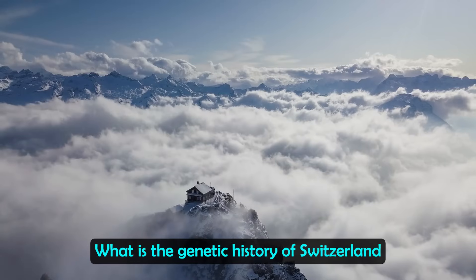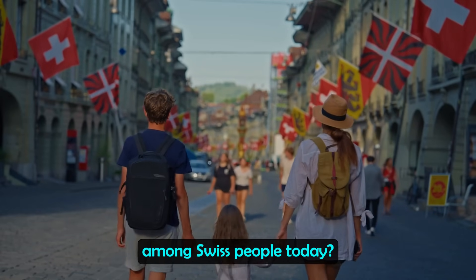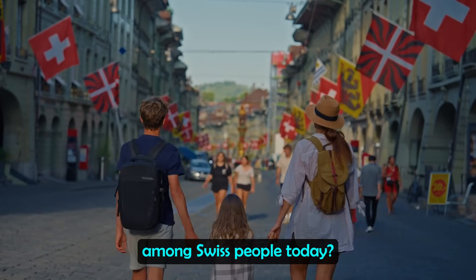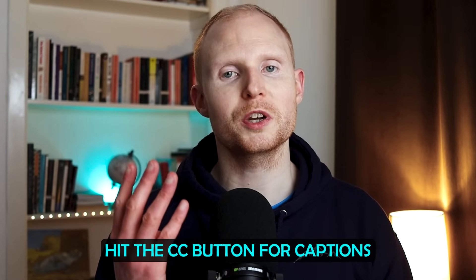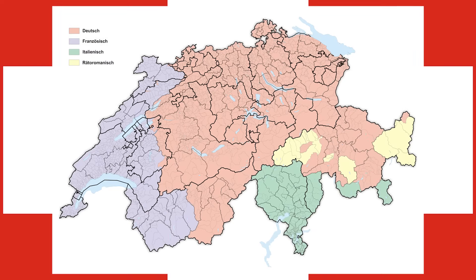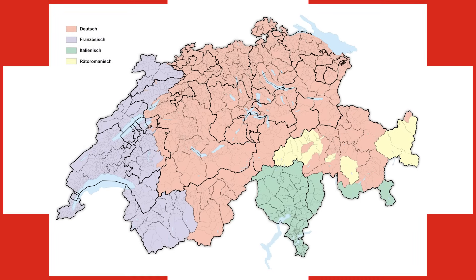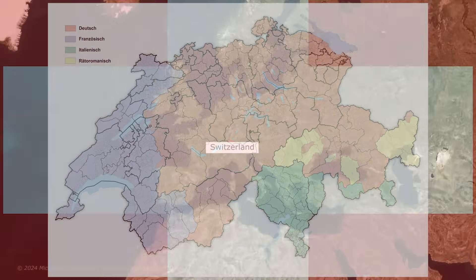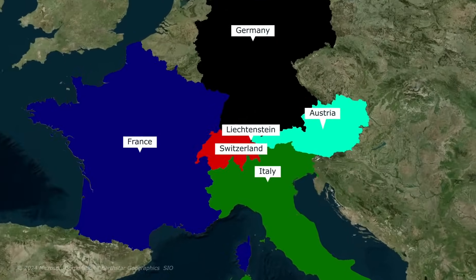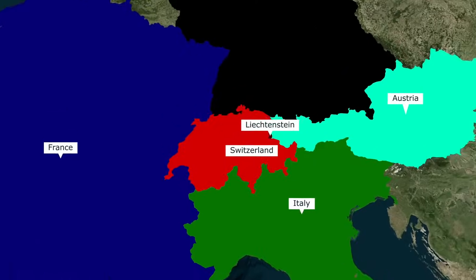What is the genetic history of Switzerland and what haplogroups are common among Swiss people today? Four official languages are spoken in Switzerland today, with German the most common, followed by French, Italian and Romansh. As you can see in this map, the country is bordered by Italy to the south, France to the west, Germany to the north, and Austria and Liechtenstein to the east.